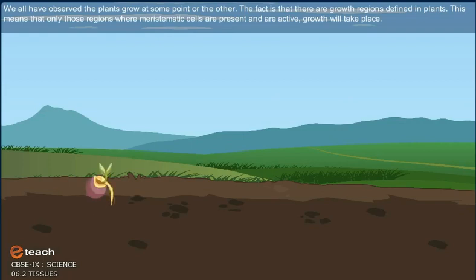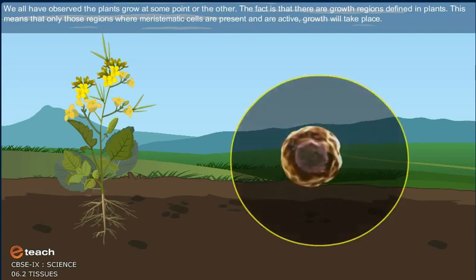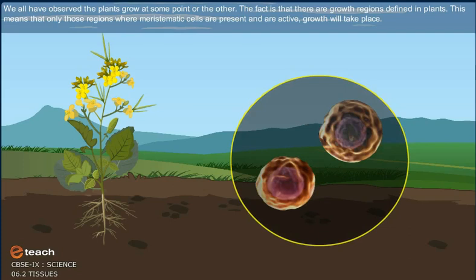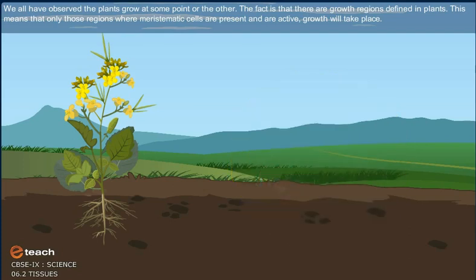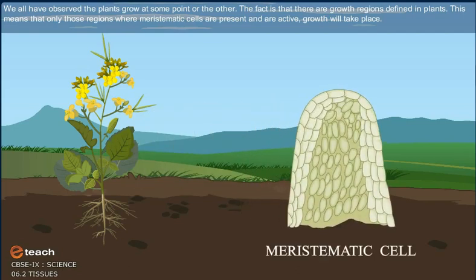We all have observed the plant grow at some point or the other. The fact is that the growth regions are defined in plants. This means that only those regions where meristematic cells are present and are active, growth will take place.